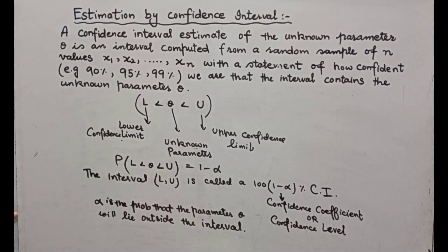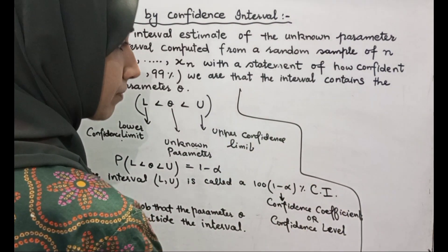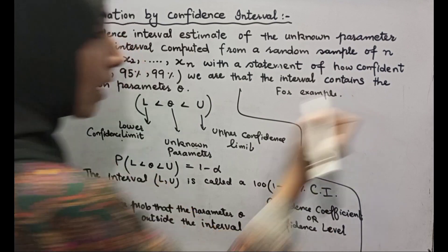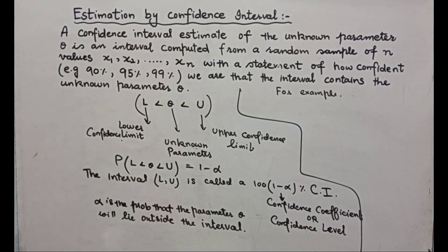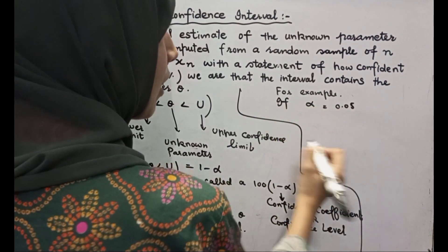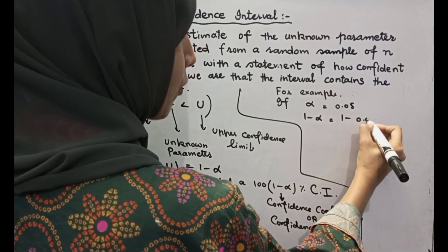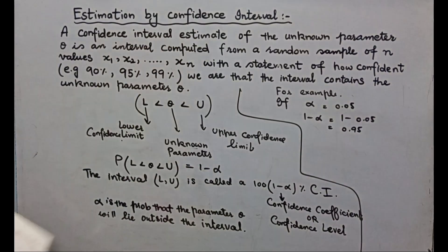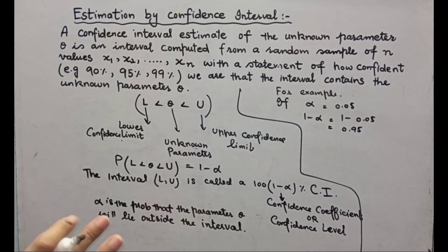Now let's take an example. If alpha is equal to 0.05, then 1 minus alpha is equal to 0.95. This means that we are 95% confident that the unknown parameter theta lies within the interval.